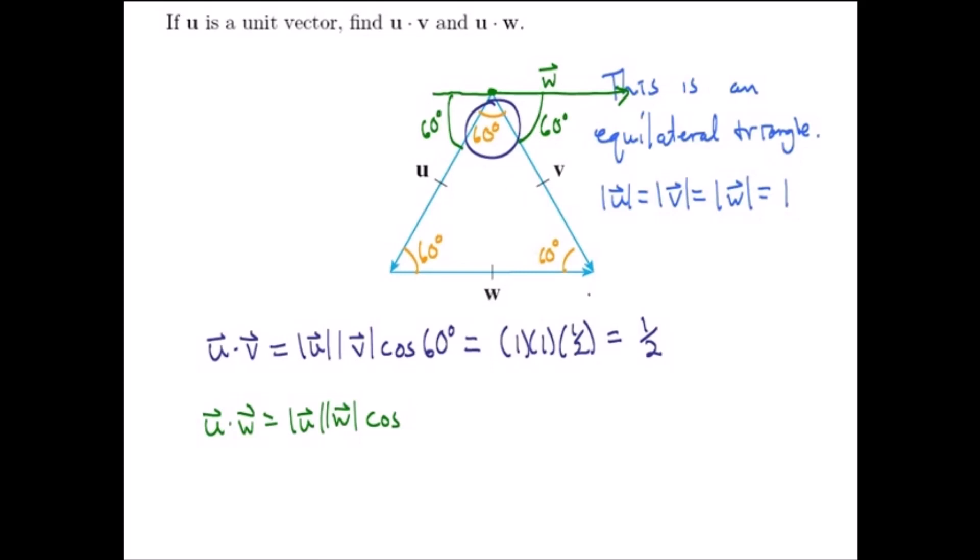So the dot product is the magnitude of u times the magnitude of w times the cosine of 120 degrees. That's 1 times 1 times negative 1/2. So negative 1/2 is the dot product of u and w.